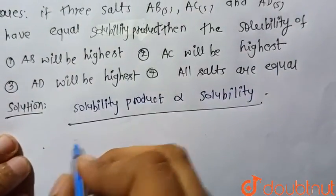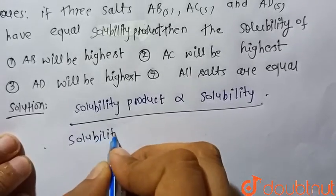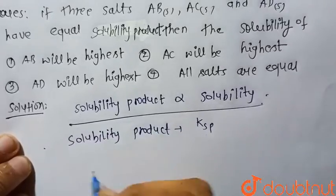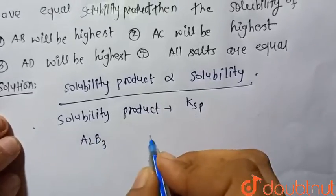First we have to define what is the solubility product. Solubility product is denoted as Ksp. So let's say A2B3 is any salt.